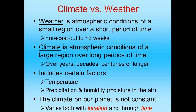A cold day, a cold month, a cold year — that's weather. A cold decade, a cold century, a cold millennium — that's climate. Weather and climate include temperature, precipitation, humidity, cloud cover, and winds. Our weather and climate isn't constant — it varies with both location and over time.